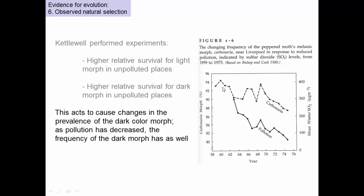To follow this up, much later in the 20th century, England started reducing pollution. Here is a plot of pollution levels coming down as measured by sulfur dioxide, and a plot showing the frequency of carbonaria coming down. So most moths were these black moths, but when pollution started coming down and the trees became cleaner, you can see a decline in the percentage of moths that were the black form. We see an example of when the trees turned black, the moths evolved to become darker, and when the trees started turning back to light, we see the reversal of that pattern of evolution.